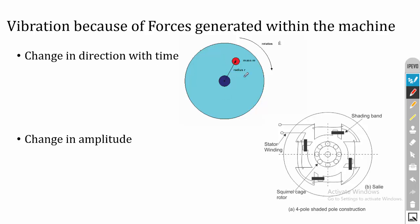Consider this image: an unbalance of mass M is placed at a radius R. When the system rotates, in one position the direction of force will be like this, and when it rotates further, assume the mass is here and the force direction will be like this. So when the system rotates, automatically the direction of force starts to vary. This change in direction of force with time will create vibration in the shaft.